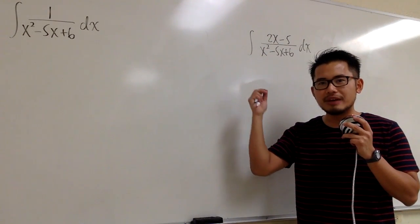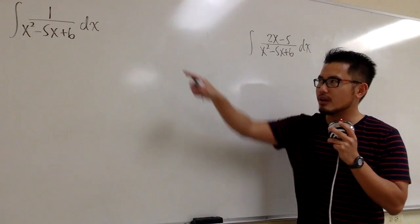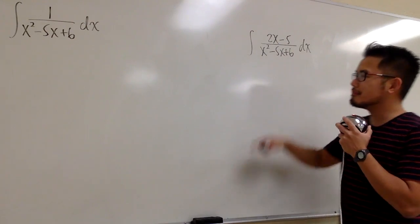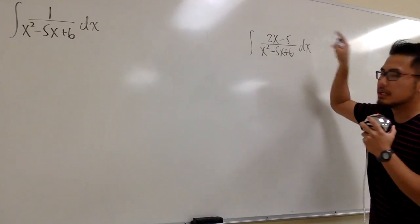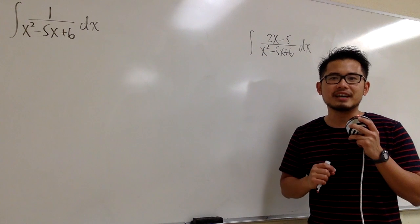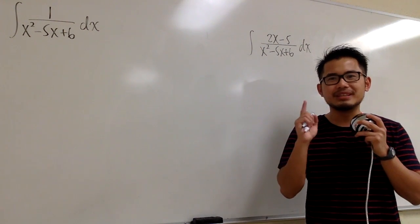As you can see, these two both have the same denominator. However, over there the top is just 1, but for this one we have 2x minus 5. Which one do you think is easier than the other? Pause the video and do the easy one first.